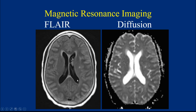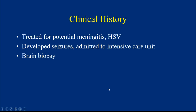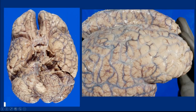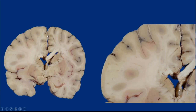The patient was treated for potential meningitis and HSV, developed seizures, was admitted to the intensive care unit, and underwent brain biopsy. She had progressive stupor, high fever, was intubated for respiratory failure, progressively declined, uncal herniation occurred, and she was declared brain dead — extubated and died three months after symptom onset. At autopsy, the brain shows a lot of mass effect, cloudiness in the leptomeninges, herniation, and edema — you can see it's difficult to distinguish gray from white matter.